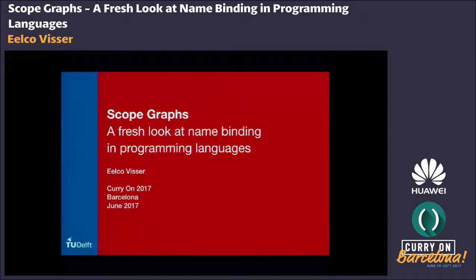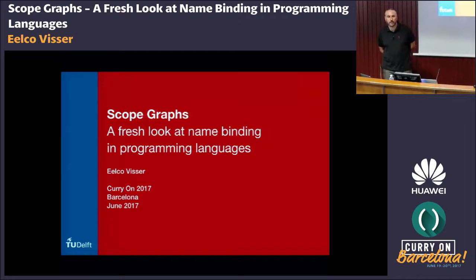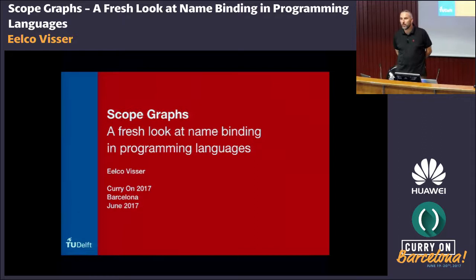My name is Ilko Visser. I'm a professor at Delft University of Technology, and today I'm going to talk about scope graphs, a new approach to name binding.